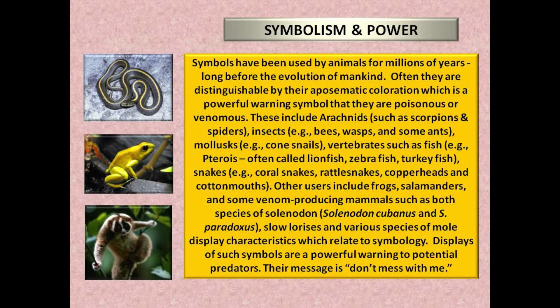Symbolism and power: symbols have been used by animals for millions of years, long before the evolution of mankind. Often they are distinguishable by their aposematic coloration — a powerful warning symbol that they are poisonous or venomous. These include arachnids such as scorpions and spiders; insects such as bees, wasps and some ants; molluscs such as cone snails; vertebrates such as fish — for example pterois, often called lionfish, zebrafish, turkeyfish — snakes such as coral snakes, rattlesnakes, copperheads and cottonmouths; frogs, salamanders, and some venom-producing mammals such as both species of solenodon. Displays of such symbols are a powerful warning to potential predators. Their message is: don't mess with me.